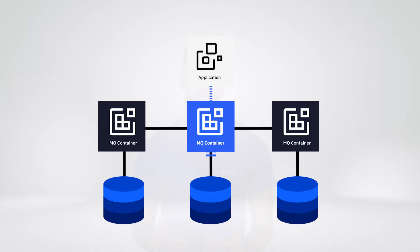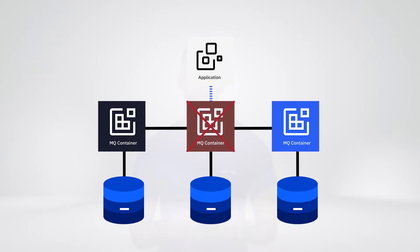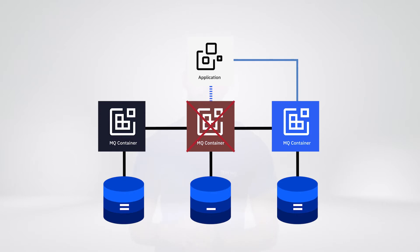Any recoverable operation, like putting a persistent message onto the queue, is synchronously replicated from the active instance to the other instances for safekeeping in the event of a failure. Should the active instance suffer a failure, one of the other instances will be automatically elected as the new active instance and then all messages will be immediately available.